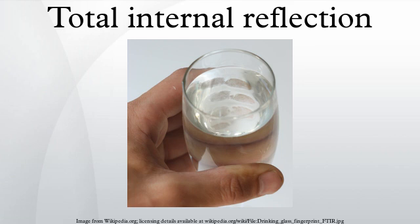Total internal reflection can be observed while swimming, when one opens one's eyes just under the water's surface. If the water is calm, its surface appears mirror-like. One can demonstrate total internal reflection by filling a bath with water and placing a glass tumbler upside down over the drain. As long as water remains in the tumbler, the drain remains visible, since the angle of refraction between glass and water will not be greater than the critical angle.